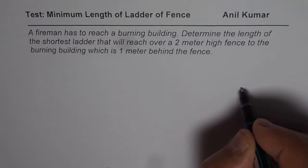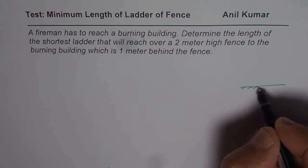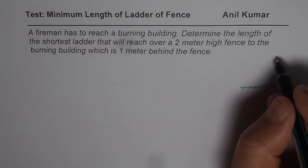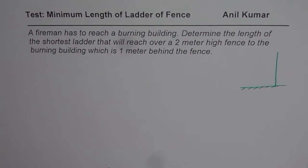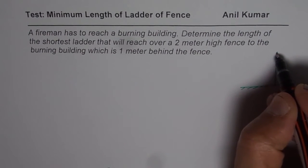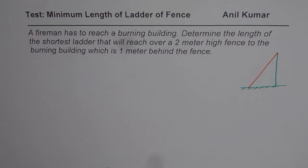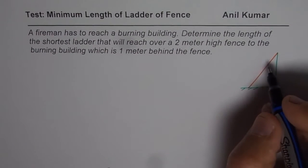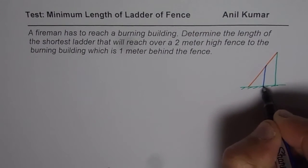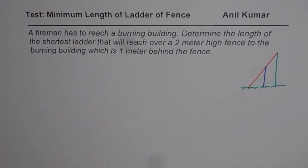So let us say that we have the ground and here is a building and what we have here is a fence. We have to reach this top over the ladder and the fence is given to us which has height of 2 meters and it is 1 meter in front of the building. So that is how the situation is.